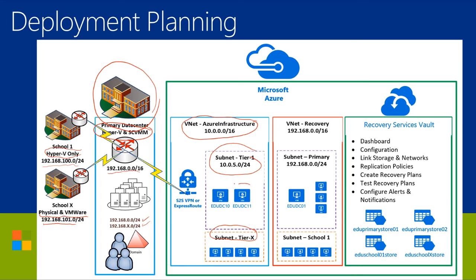In Tier 1, we have production and connected domain controllers — EDU DC 10 and EDU DC 11 are running in Azure. We could assume those are in an availability set to protect against outages in Azure. We also have a connection to on-premise through a site-to-site VPN or ExpressRoute. If you have a hybrid environment with VMs running in Azure, you typically want them connected on-premise. That's the pre-site recovery environment: everything is set up and running.